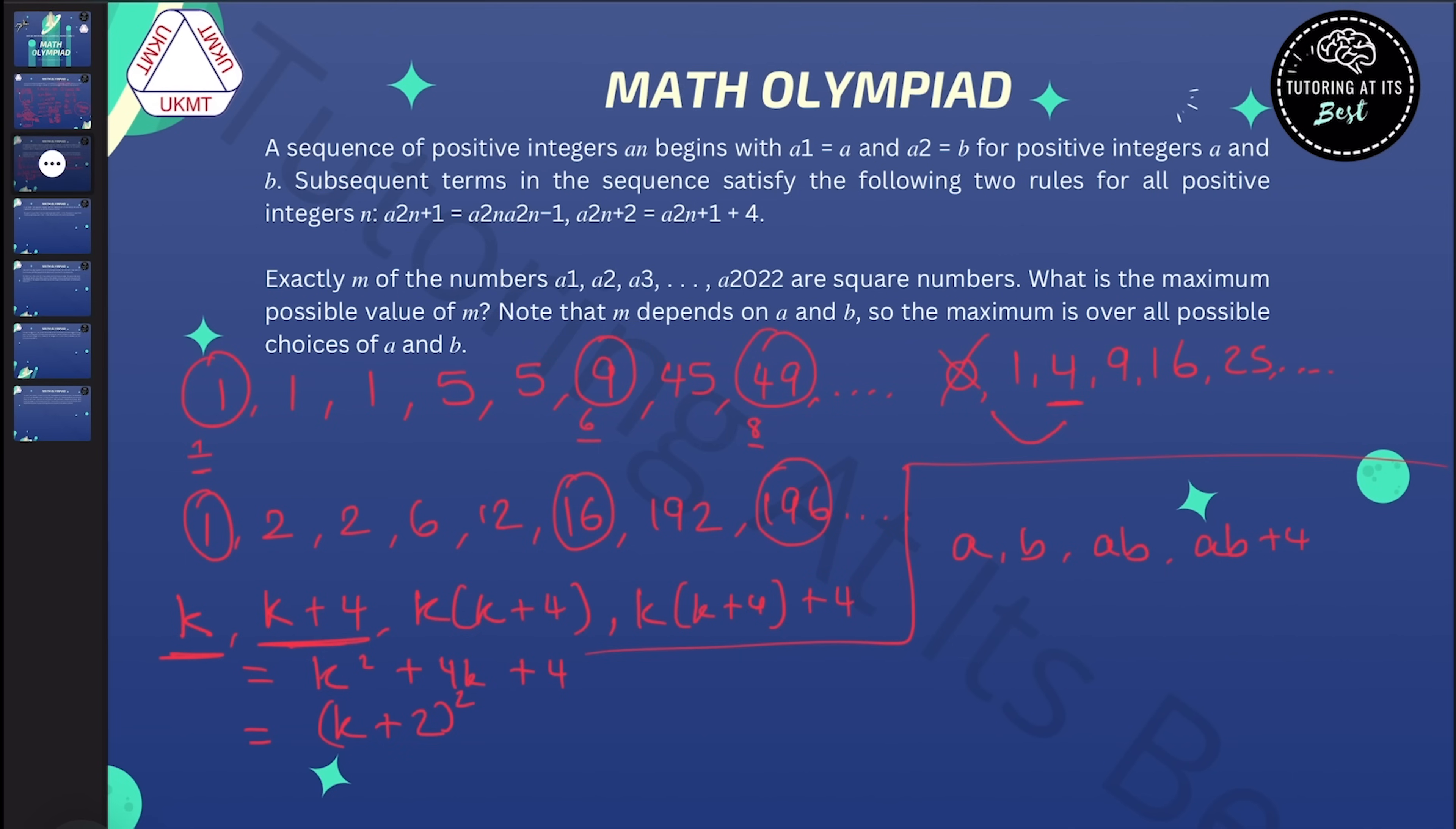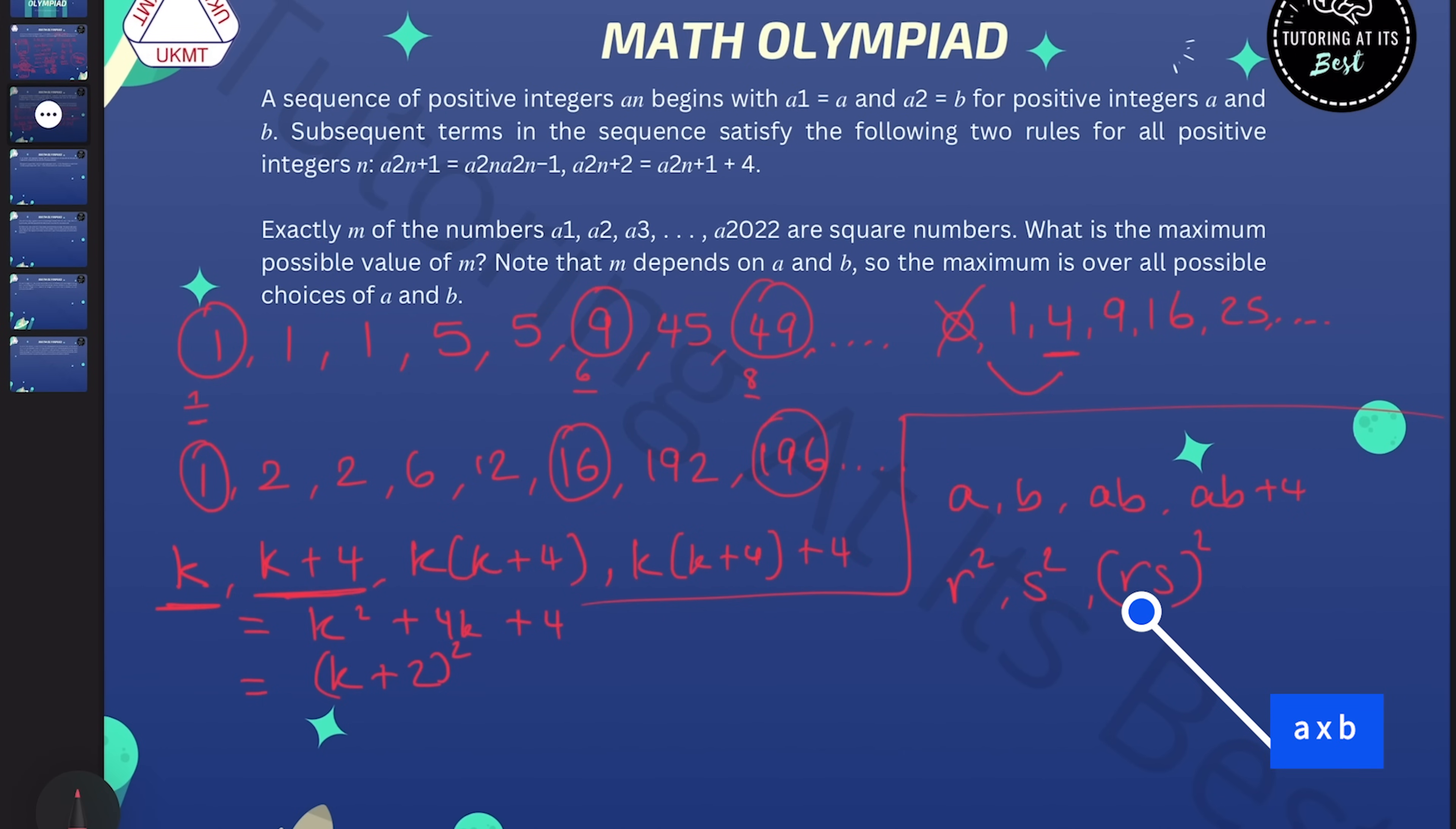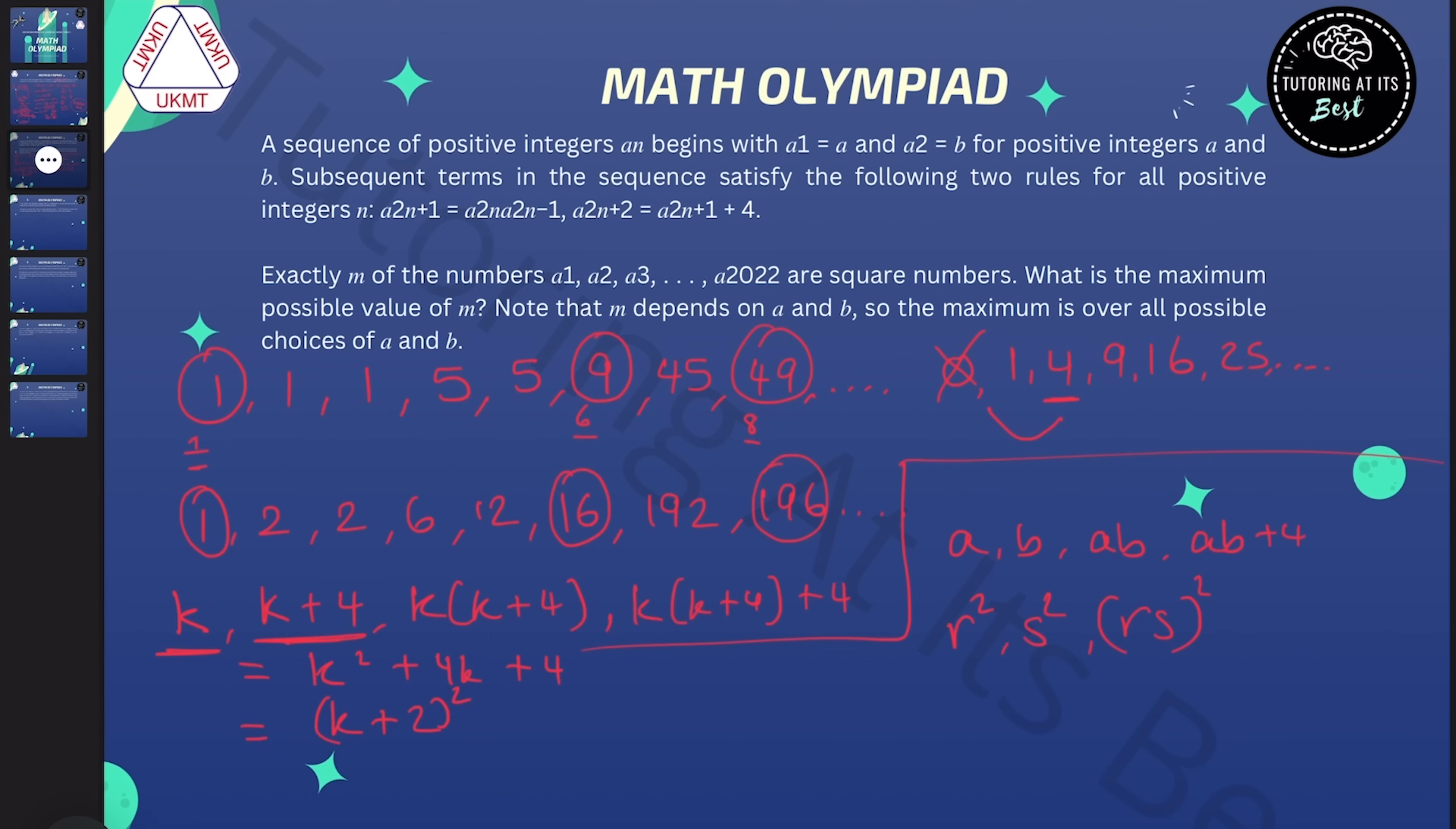But of course, if a is a square and b is a square, then a times b is automatically a square, and a times b plus 4 would automatically not be a square. So what we've got is that we can get three of the first four terms to be squares by taking the first two to be squares. And that completely answers the question.